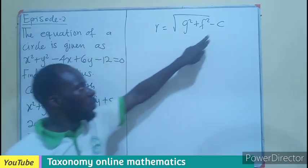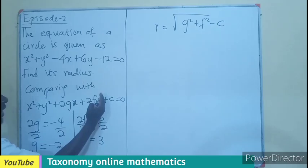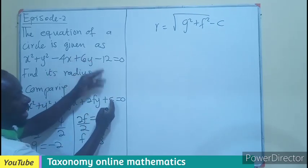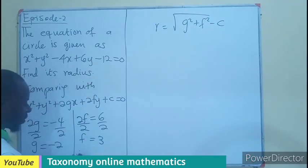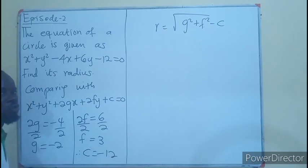Now we need the c value. If you compare, whatever comes after at the end is c. Therefore, c will be negative 12.